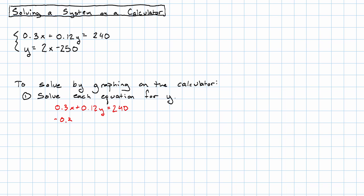I'll subtract 0.3x from both sides, and I'll divide both sides by 0.12. And I could distribute that division if I really wanted to, but I don't really want to. Instead, I'm just going to enter each equation on the calculator.